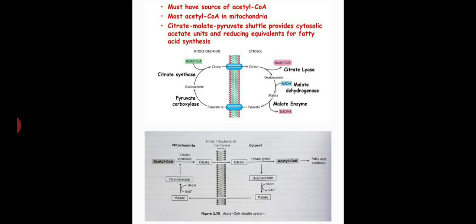Acetyl coenzyme A is formed in the matrix of mitochondria, but it cannot cross the inner mitochondrial membrane. Therefore, an acetyl coenzyme shuttle system is required to transport the 2-carbon units out of the mitochondria and into the cytosol.